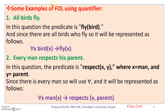This is first-order logic. In first-order logic with quantifiers, we can represent natural language sentences. First example: 'All birds fly.' This uses the universal quantifier. The predicate is 'fly(x).' The representation is: 'for all x, where x is a bird, x flies.'